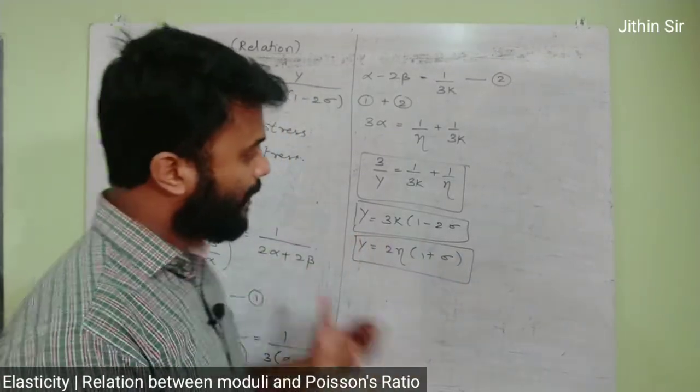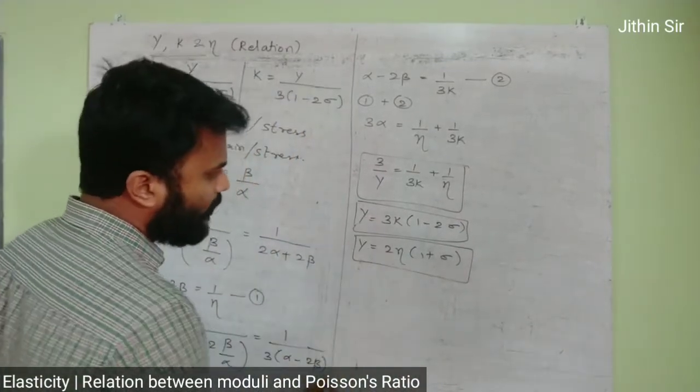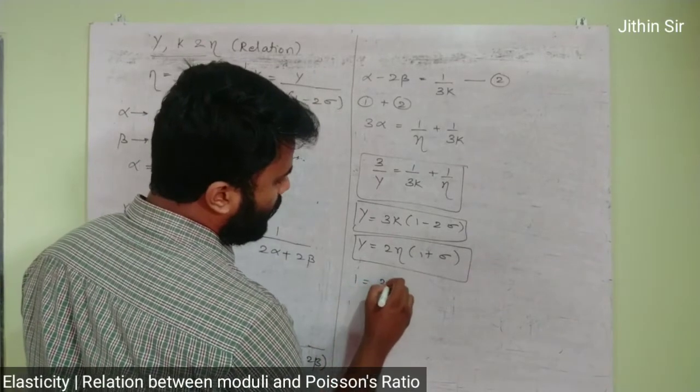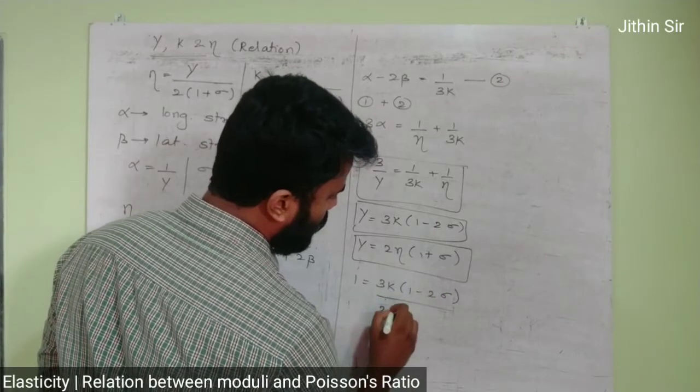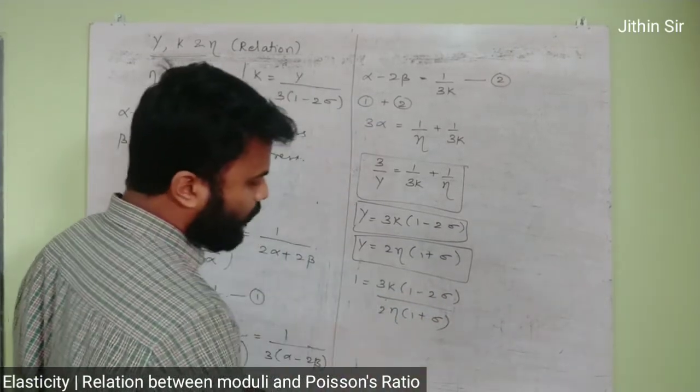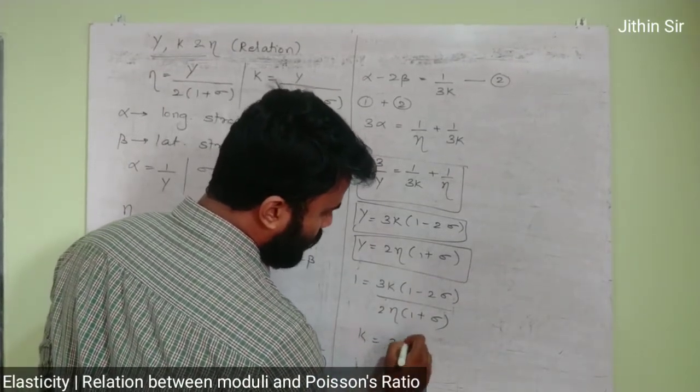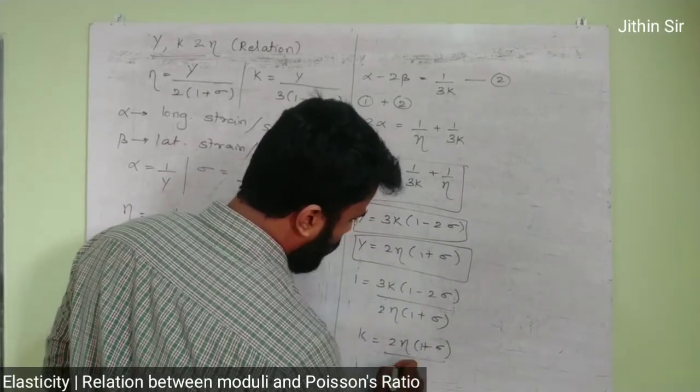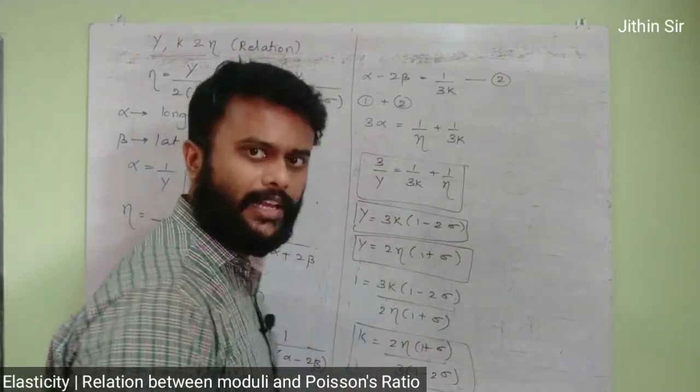Setting these equal: 3k times 1 minus 2 sigma equals 2 eta times 1 plus sigma. If I isolate k, we get k equals 2 eta times 1 plus sigma upon 3 times 1 minus 2 sigma. This expression relates k to eta and sigma.